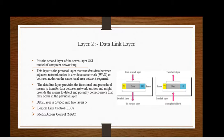Data link provides a functional and procedural means to transfer data between network entities and might provide the means to detect and possibly correct errors that may occur in the physical layer. This layer is divided into two sections.